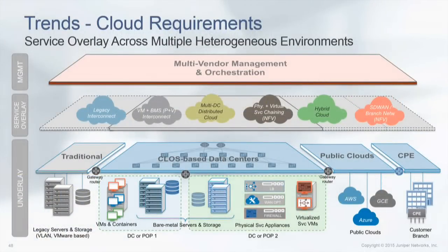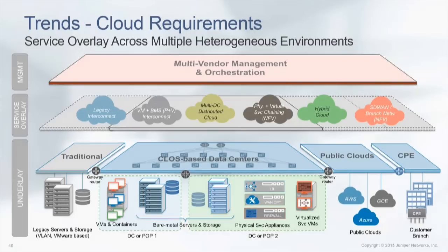All our customers — whether enterprises, service providers, cloud SaaS companies, or emerging companies — have multiple heterogeneous environments they want to interconnect. They have traditional VMware-based environments with VLAN architecture, and they are building next-generation spine-and-leaf, cloud-based data centers. These data centers will have virtual machines, containers, bare metal servers and storage for Hadoop clusters, as well as physical service appliances like load balancers and firewalls, and virtualized instances of those across distributed data centers.